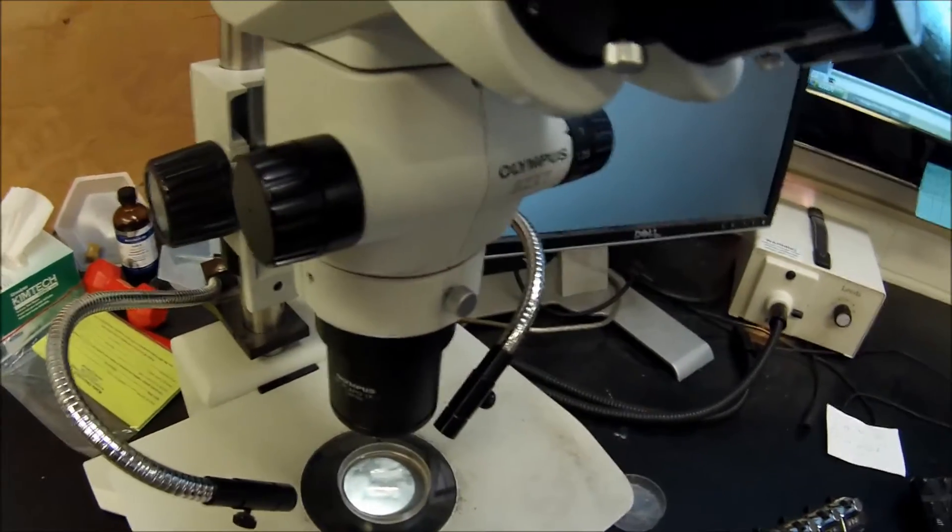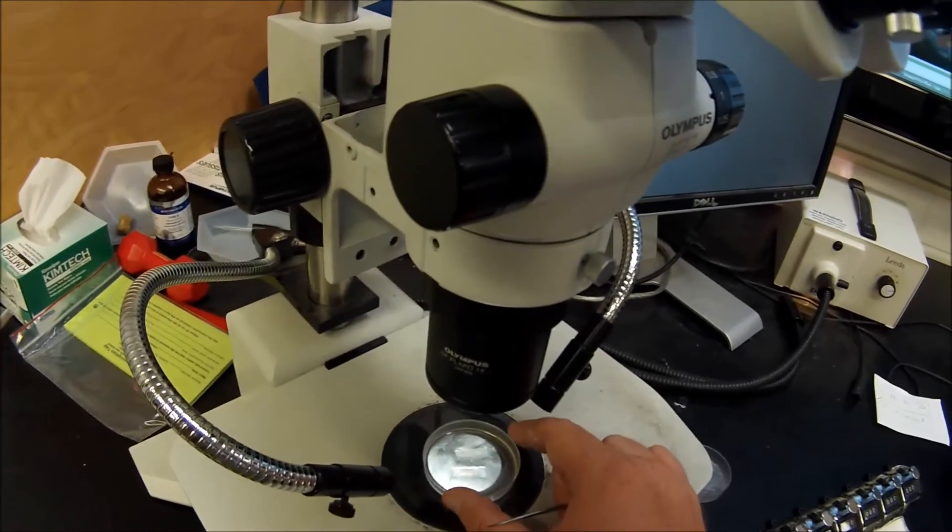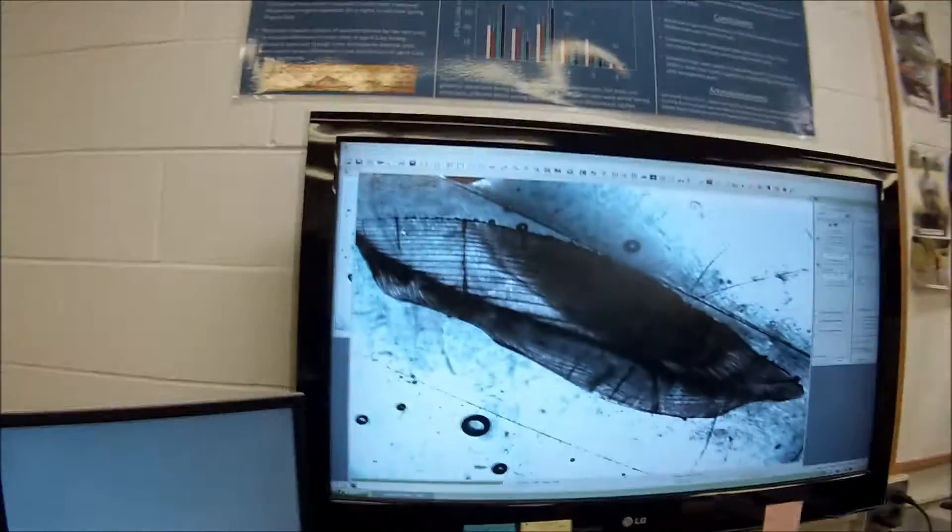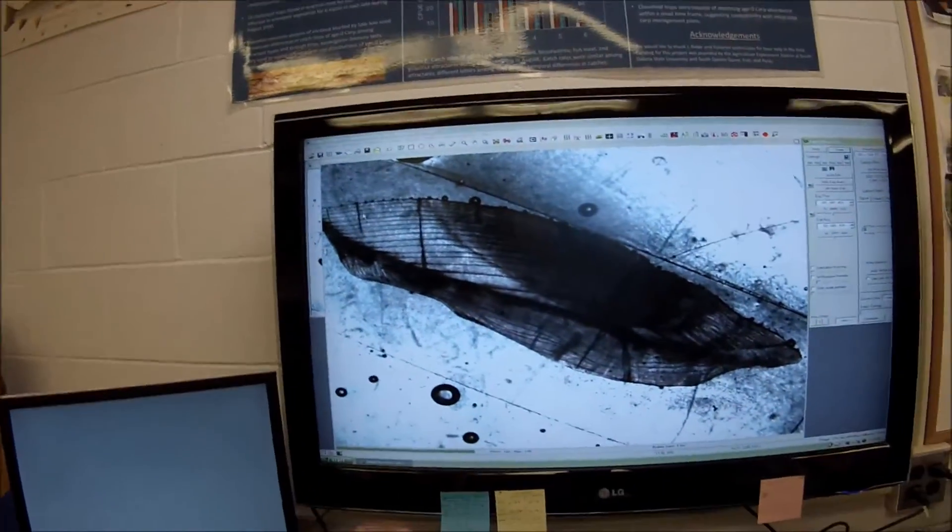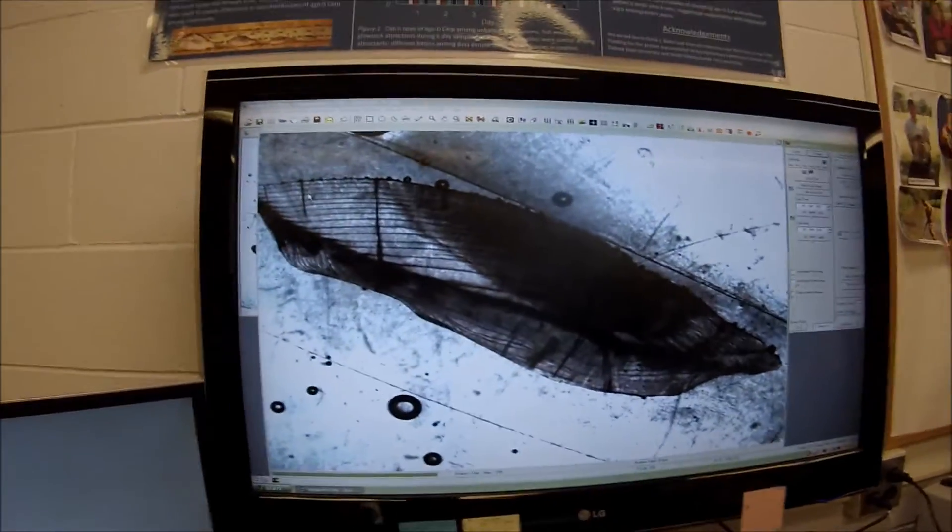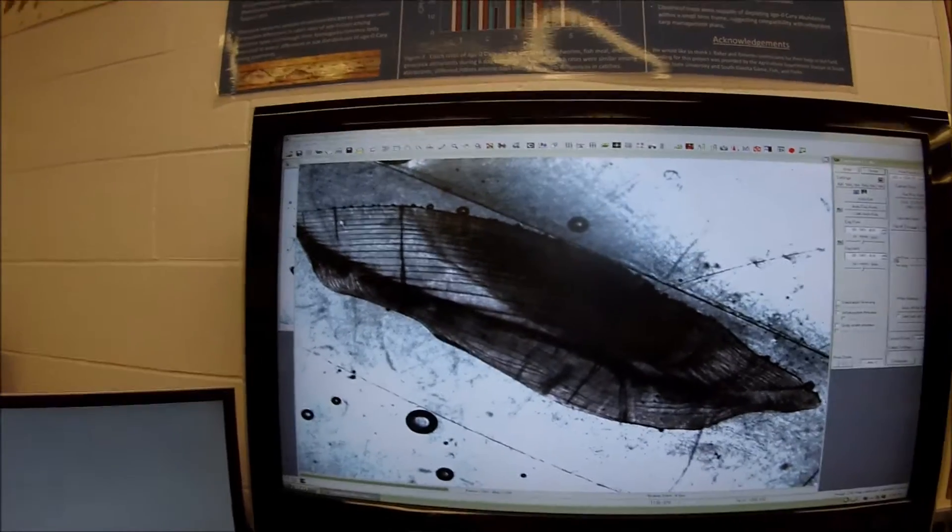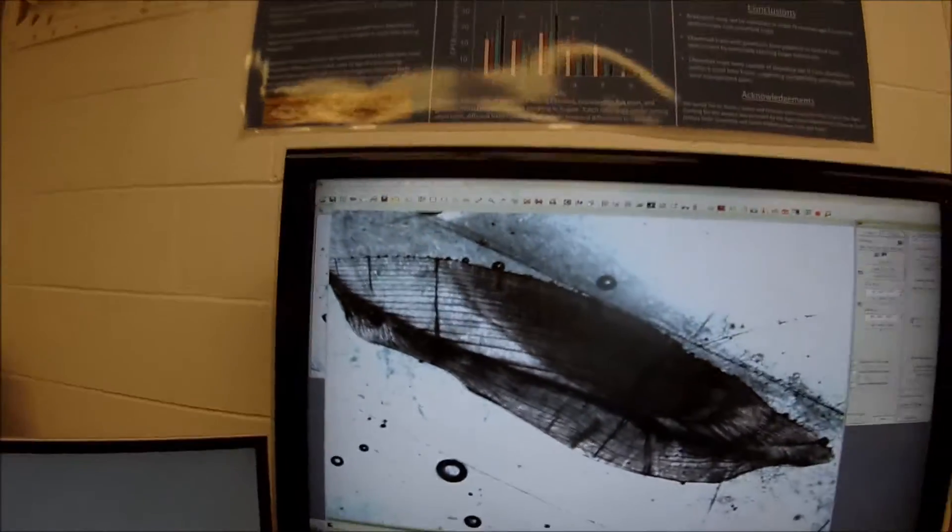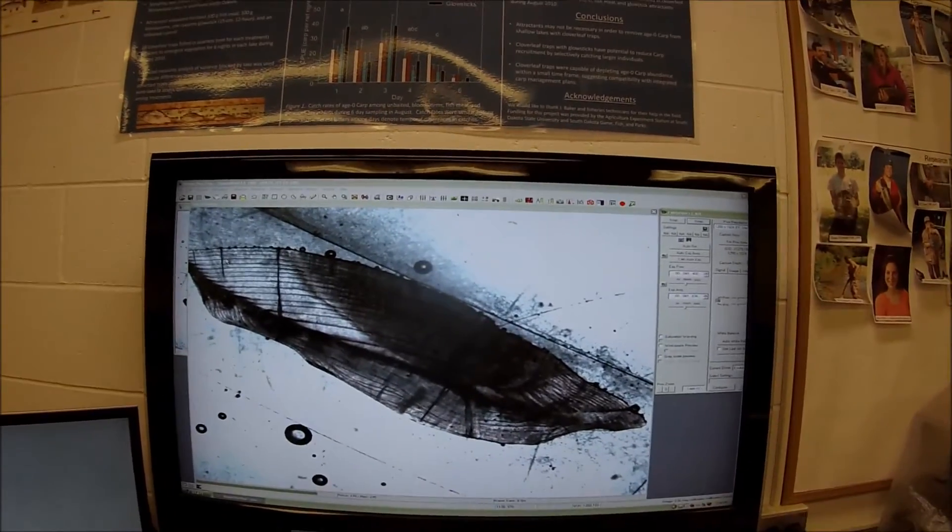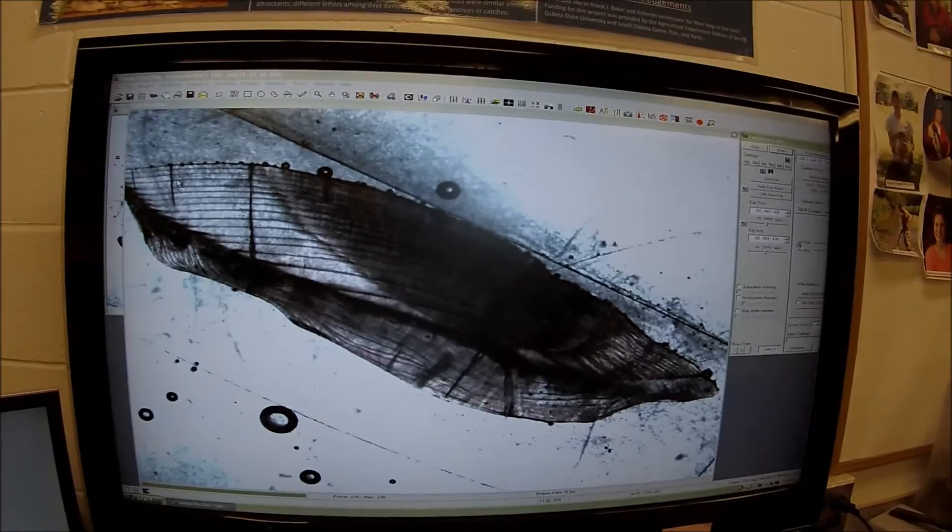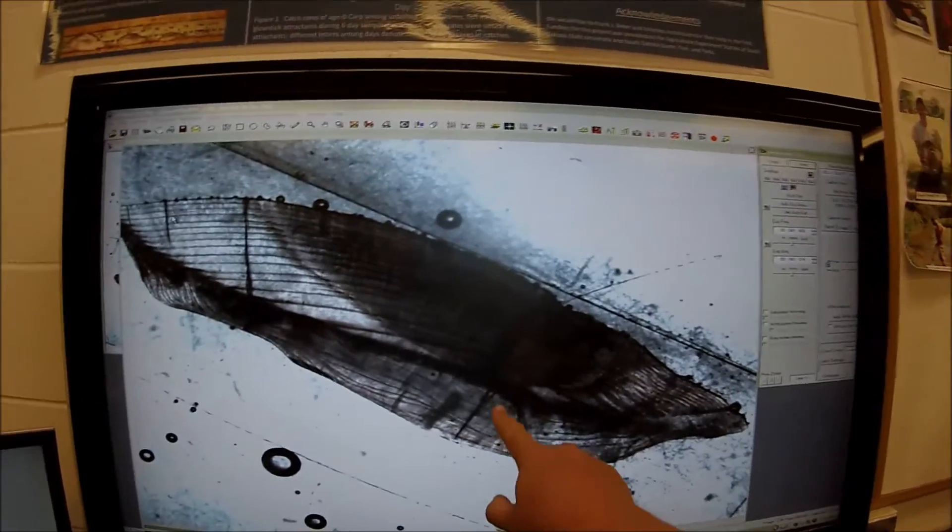And this very nice microscope is hooked up to a computer so that we can actually blow up the image so we don't have to squint our eyes into the microscope. So this is a very old fish here. We can adjust the light. It might make it a little bit easier for you. So this is the proper way to age fish, in my opinion. And you can see here, this is the nucleus.